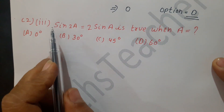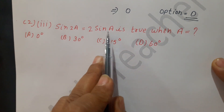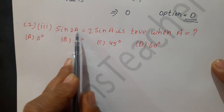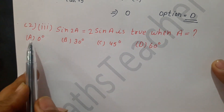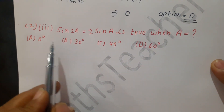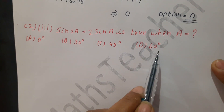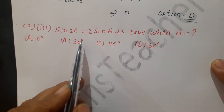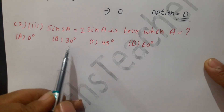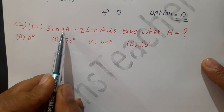The third part is: sin2A = 2sinA is true when A equals what? We have to identify the value of A from these 4 options: option A is 0°, option B is 30°, option C is 45°, and option D is 60°. We need to put each value in and check.